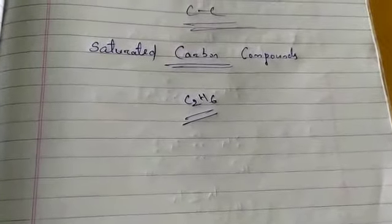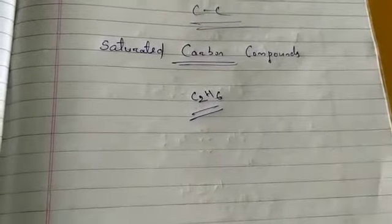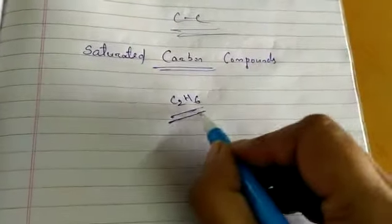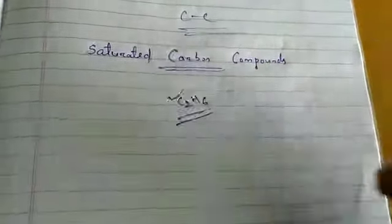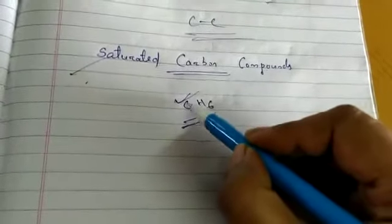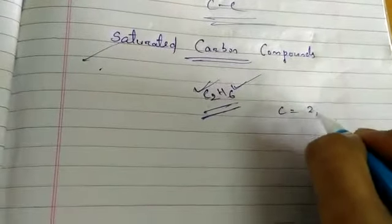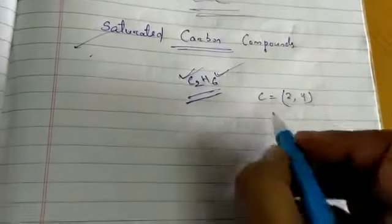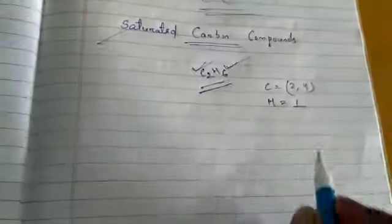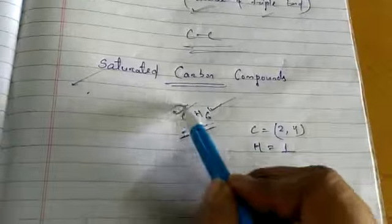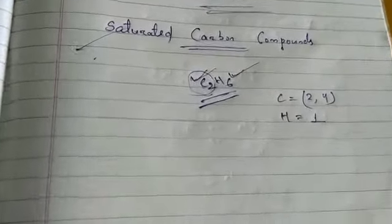To arrive at the structure of simple carbon compounds, first we link the carbon atoms together with a single bond, and then we use hydrogen to satisfy the remaining valences. Carbon has atomic number 6, so its electronic configuration is 2, 4 — we take the outermost orbit. Hydrogen has 1 electron. First, we will make the single bond between the two carbon atoms.